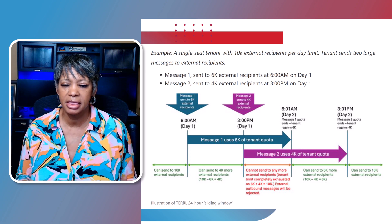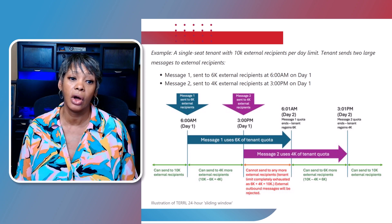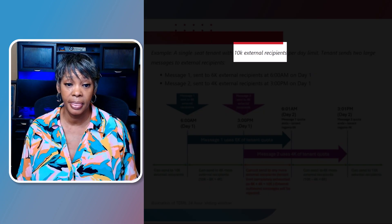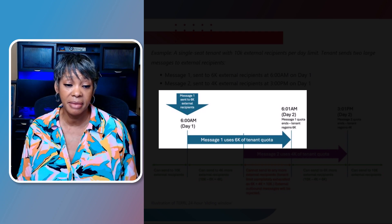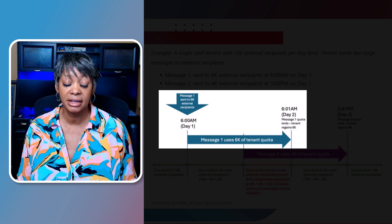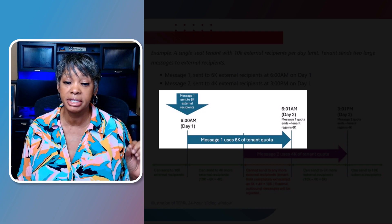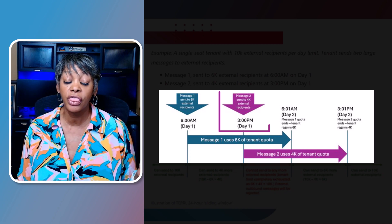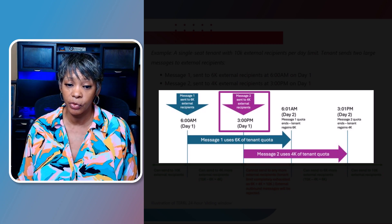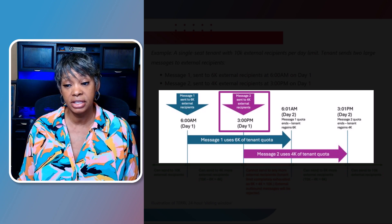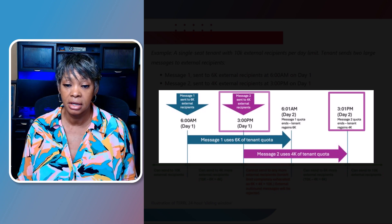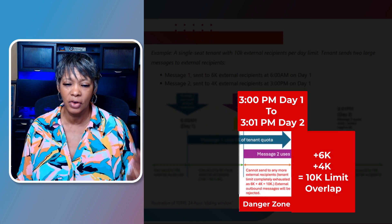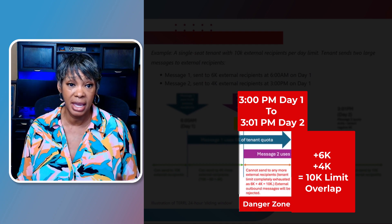Microsoft has provided a chart that explains what happens when two large email campaigns go out in the same day. In this example, if your quota is 10,000 and you send 6,000 emails at 6 a.m., those 6,000 are counted until the next day at 6:01 a.m. If a second campaign of 4,000 goes out at 3 p.m., that count is released starting at 3 p.m. on day two. The watch-out is the overlap window between 3 p.m. and 6 a.m. — during that overlap you cannot send external emails.